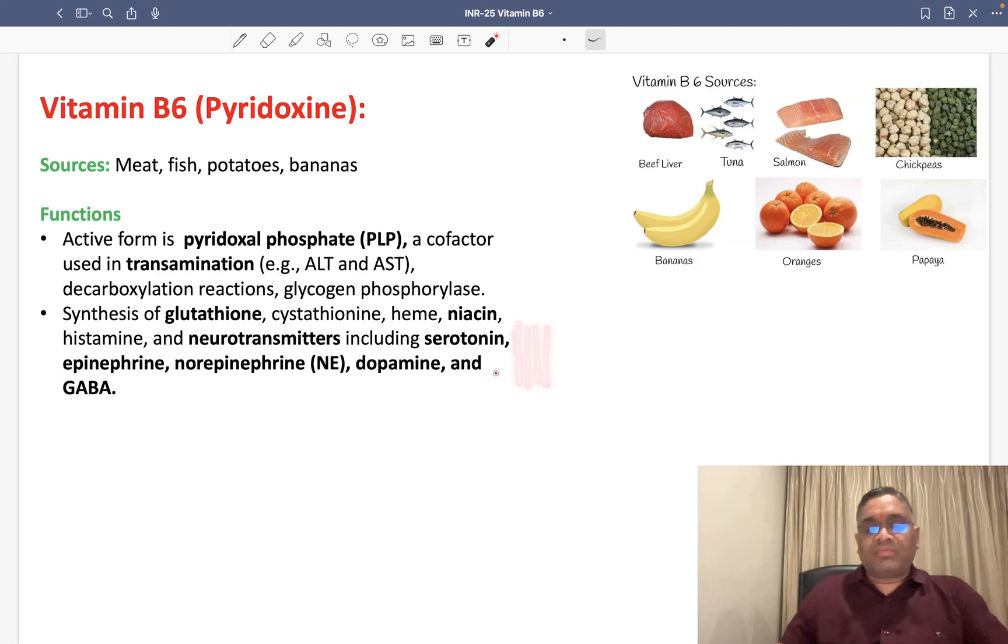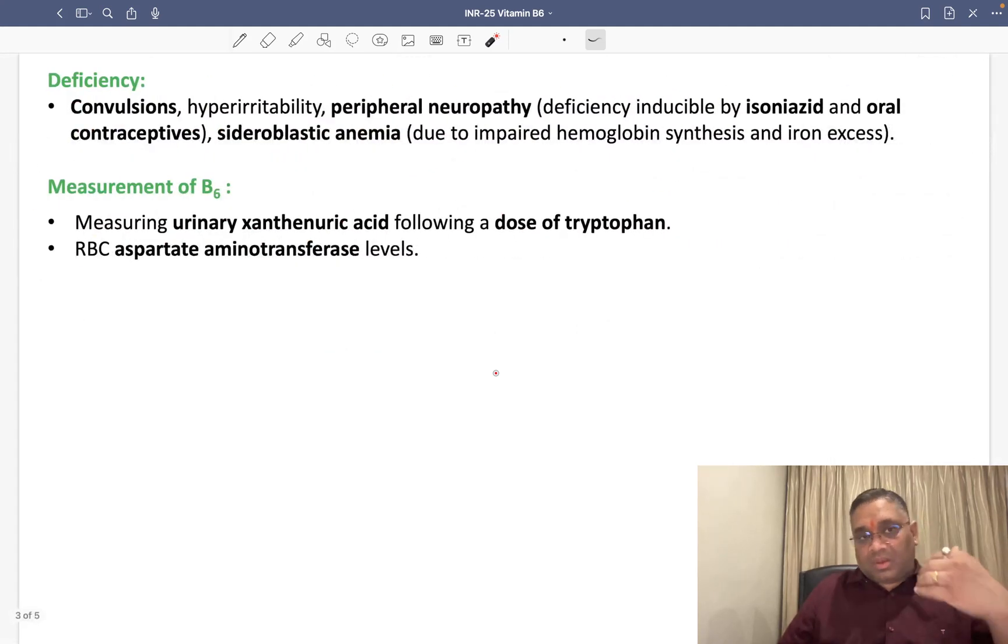All these are neurotransmitters which will be synthesized by Vitamin B6. Because of deficiency of Vitamin B6, what you will see in the patient? They will have convulsions, they will be having hyperirritability because the neurotransmitters will be defective, so peripheral neuropathy will be there.